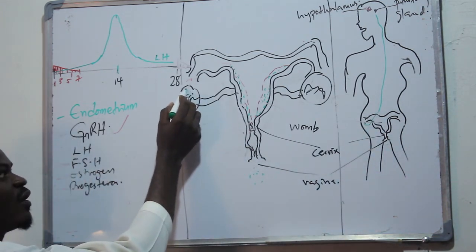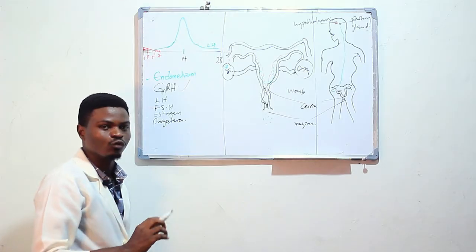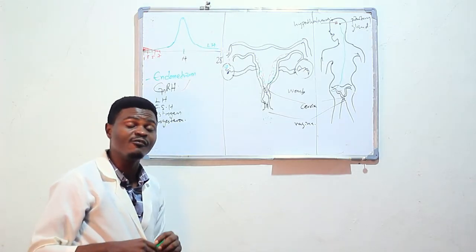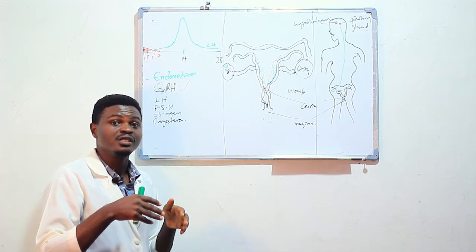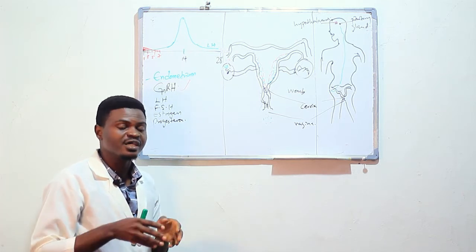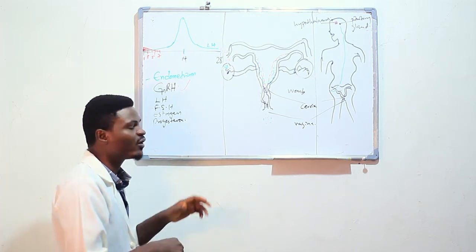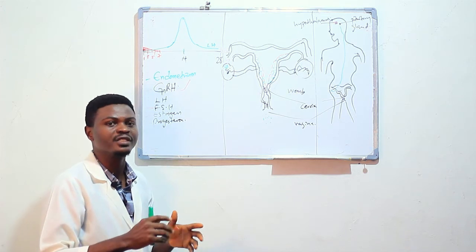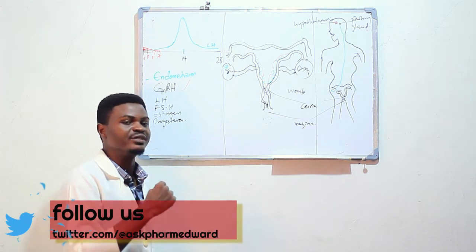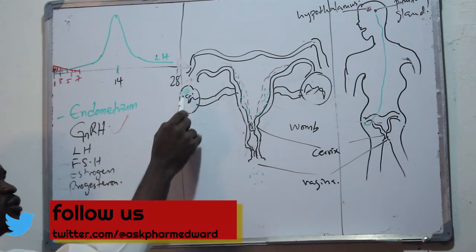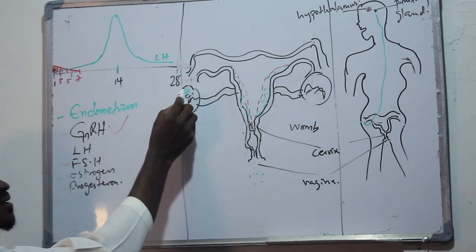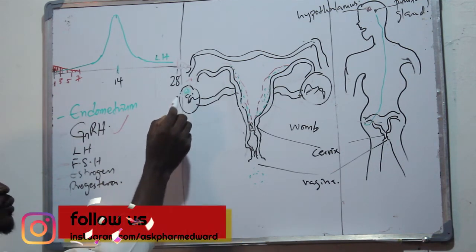The ovum, the egg, is right within the follicle. The follicle has to mature, grow to a point before the egg can be released. The follicle begins to develop. There are glands around the developing follicles that will begin to produce another hormone called estrogen.